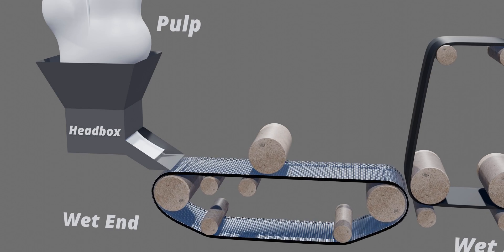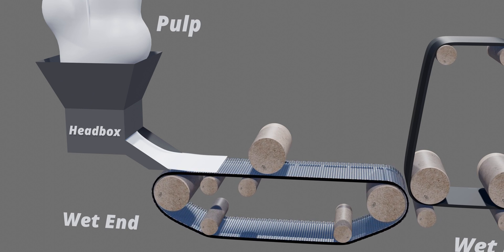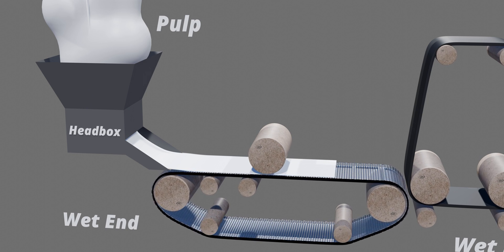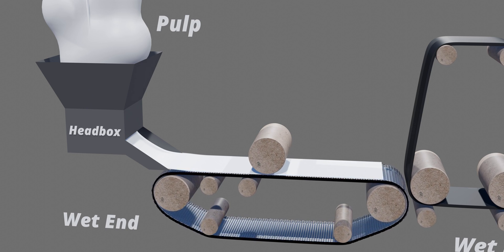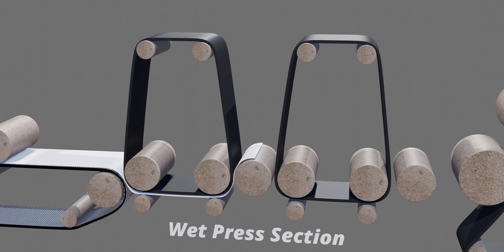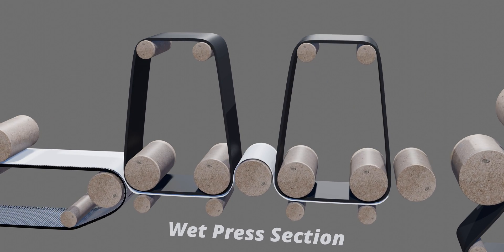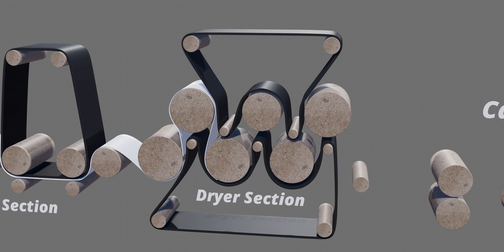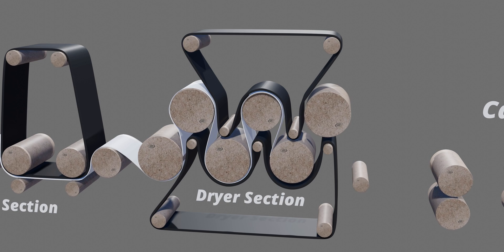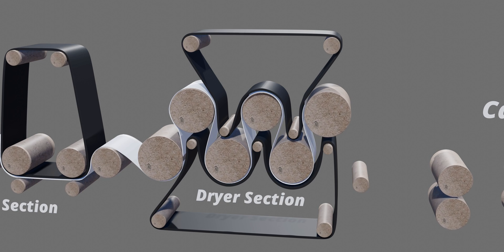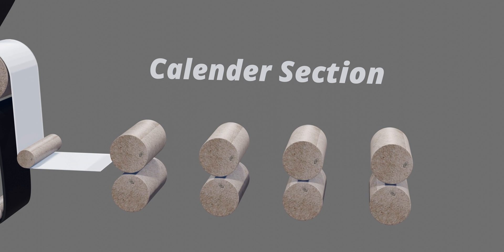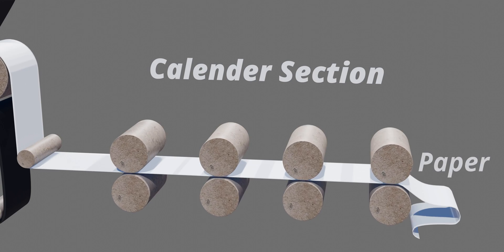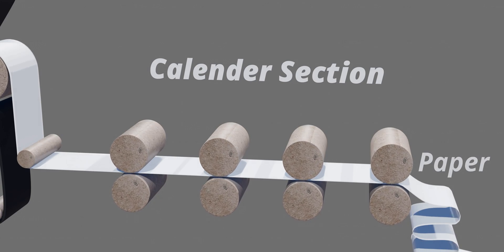Then the pulp is fed into the fourdrinier machine on a moving belt of fine mesh screening. The pulp is squeezed through a series of rollers, while a suction device below the belt drains off water. Then the paper moves onto the wet press section, where it is pressed between rollers of wood felt. Next, it passes through the dryer section, which contains a series of steam-heated cylinders to remove the remaining water. Finally, the paper reaches the calendar section, which uses rollers mounted opposite each other to put pressure on the paper and create a smooth finish.